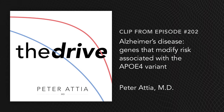The fourth isoform is the high-risk one. If you're a 2-4, it seems to more or less be a wash — maybe a slight increase in risk. The 3-4 seems to be associated with about a two to three-fold risk in Alzheimer's disease, and the 4-4 probably carries about an 8 to 12-fold increase in risk.